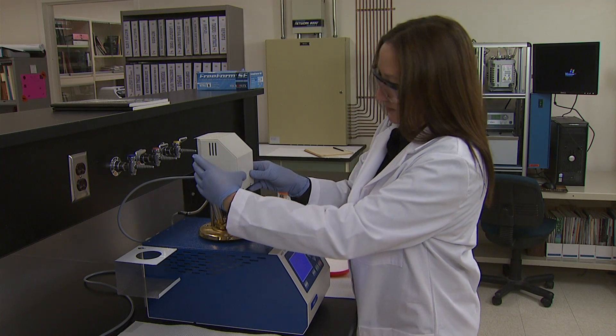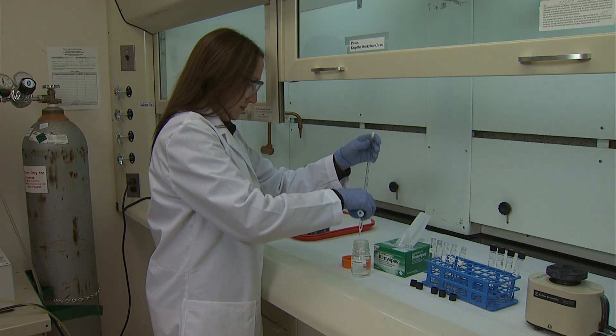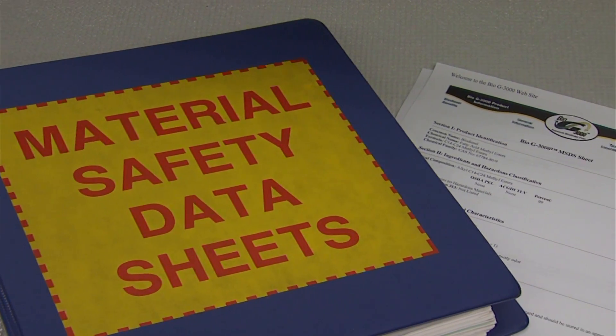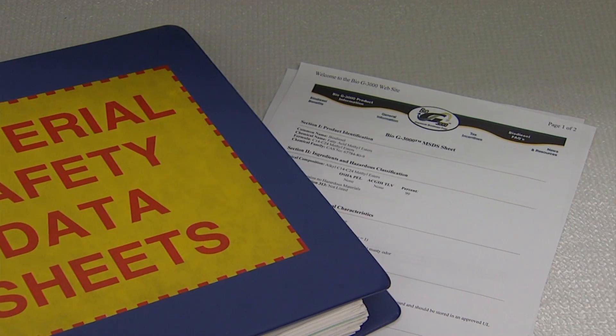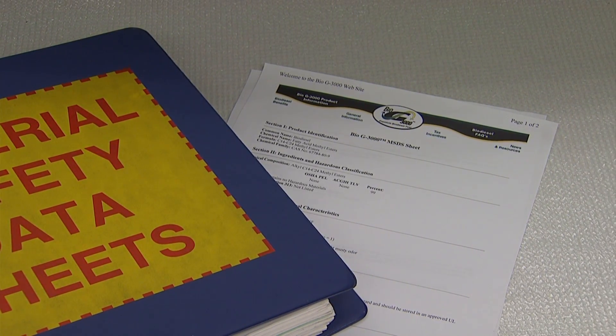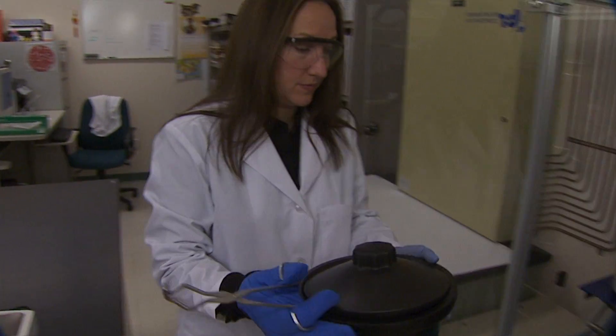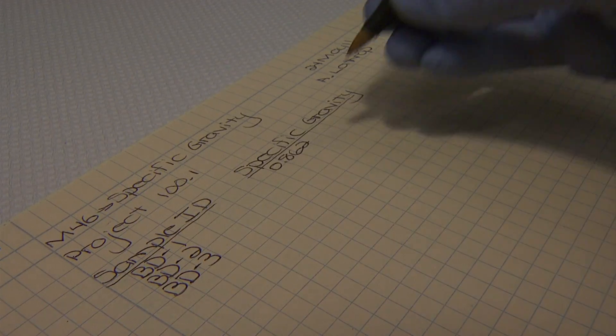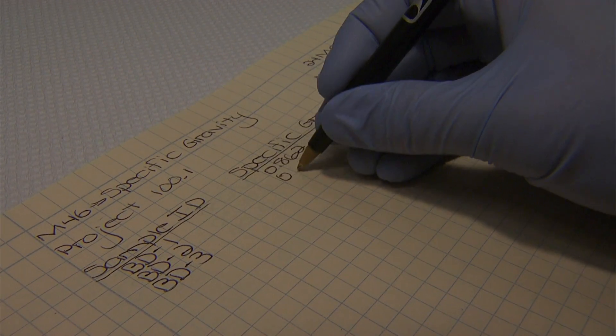Some of the recommended guidelines include follow safety precautions at all times. Consult the Material Safety Data Sheet for detailed information on the chemical substances related to the method. Wear the appropriate personal protective equipment for handling chemicals and instrumentation. Record data at the time of observation.